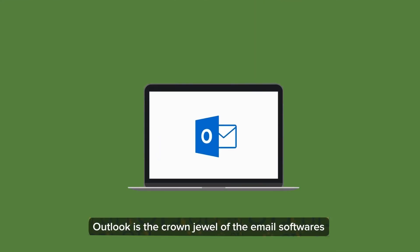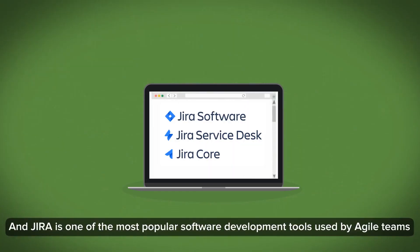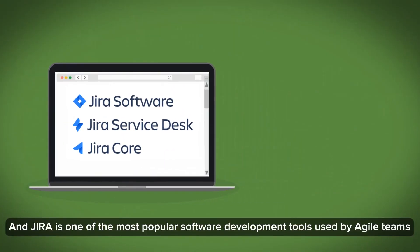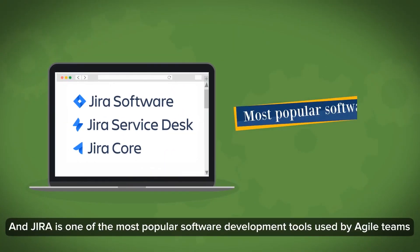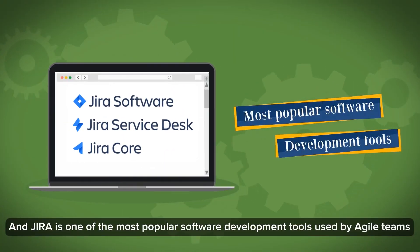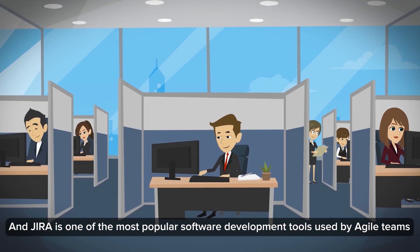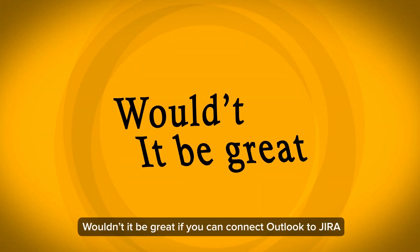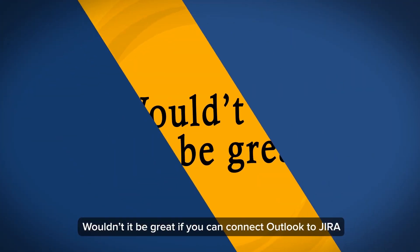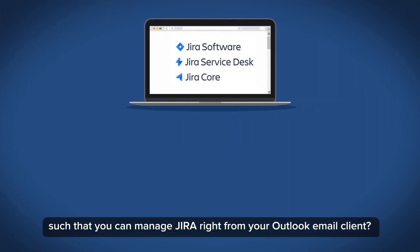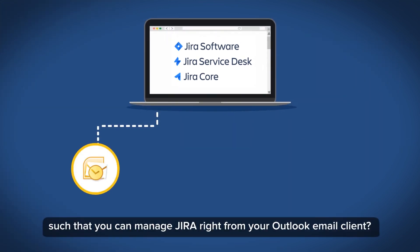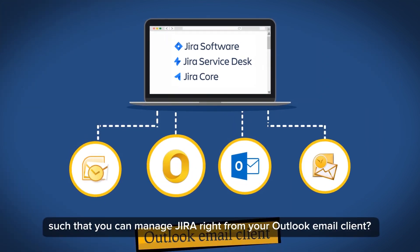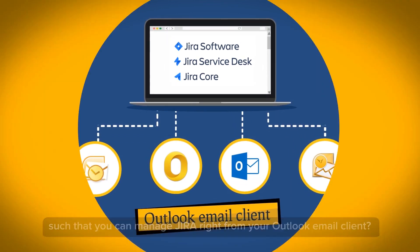Outlook is the crown jewel of email software, and Jira is one of the most popular software development tools used by agile teams. Wouldn't it be great if you could connect Outlook to Jira such that you can manage Jira right from your Outlook email client?